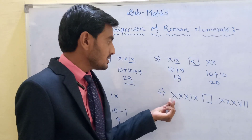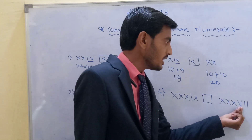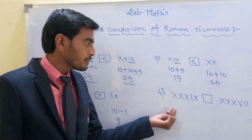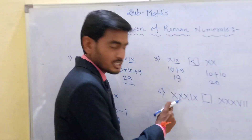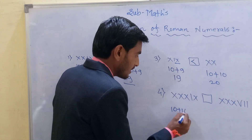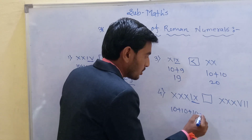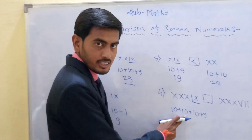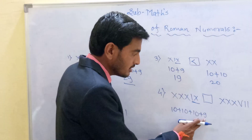The last example: XXXIX and XXXVII. First, identify the Hindu-Arabic number for XXXIX. X is 10, plus 10, plus 10, and IX is 9. So 10 plus 10 is 20, 20 plus 10 is 30, and 30 plus 9 is 39.